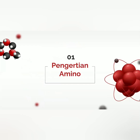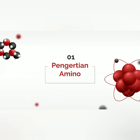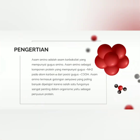Langsung saja untuk materi yang pertama tentang pengertian asam amino. Asam amino adalah asam karboksilat yang mempunyai gugus amino. Asam amino sebagai komponen protein yang mempunyai gugus NH2 pada atom karbon alfa dari posisi gugus COOH. Asam amino termasuk golongan yang paling banyak dipelajari, karena fungsinya sangat penting dalam organisme, yaitu sebagai penyusun protein.